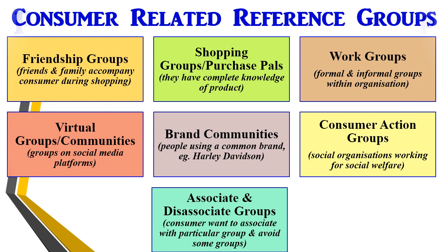Now let's discuss consumer-related reference groups. Each person or consumer is influenced by a diverse range of people they come in contact with. There are basically seven main types. The first are friendship groups — consumers enjoy the company of their friends while purchasing certain products, and friends mostly influence consumers in clothing, jewelry, cosmetics, watching movies, etc.